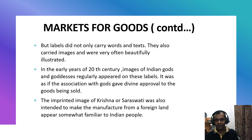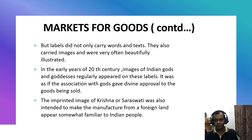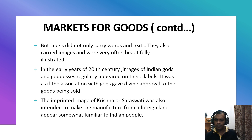But labels did not carry words and texts at the time. They carried images and were often beautifully illustrated. In the early part of the 20th century, images of Indian Gods and Goddesses regularly appeared on these labels. It was as if the association with Gods gave divine approval to the goods being sold. The imprinted image of Krishna or Saraswati was also intended to make the manufacture from a foreign land appear somewhat familiar to the Indian people — meaning images of Gods began to be used on a large scale even for products imported from Britain.